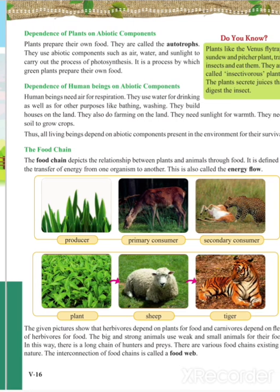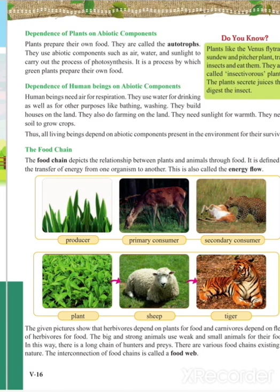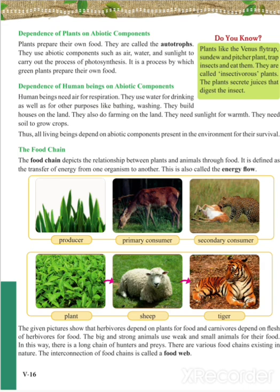Now we will see the dependency of human beings on abiotic components. Human beings depend on the environment: they need air to respire, water to drink, and water for daily use and building constructions. Human beings also use water for planting, watering plants, and farming. Additionally, human beings depend on sunlight for warmth and need soil to grow crops. Thus, all living beings depend on abiotic components present in the environment for their survival.